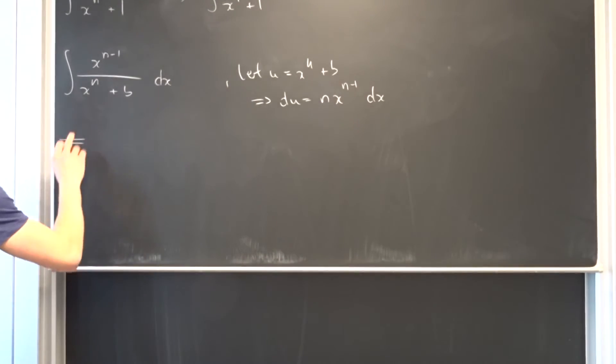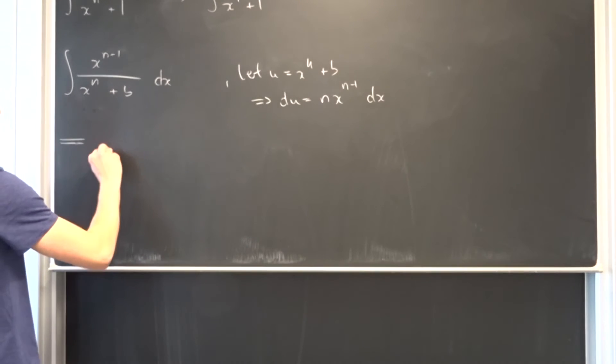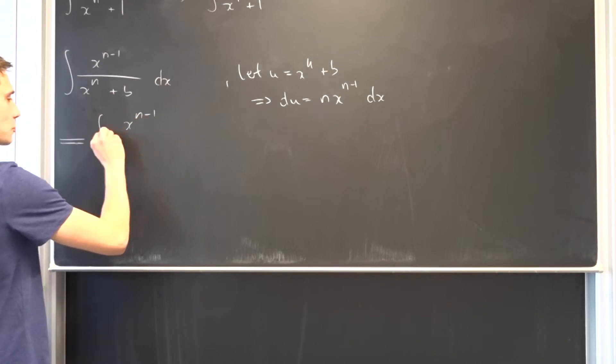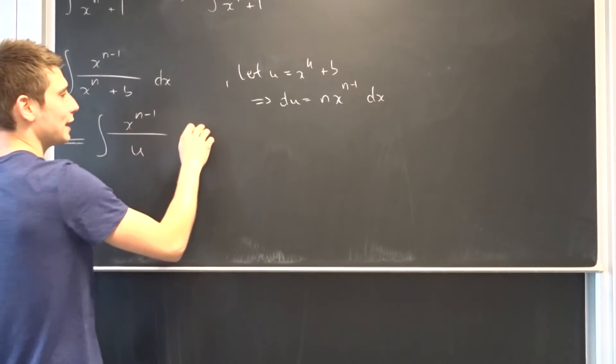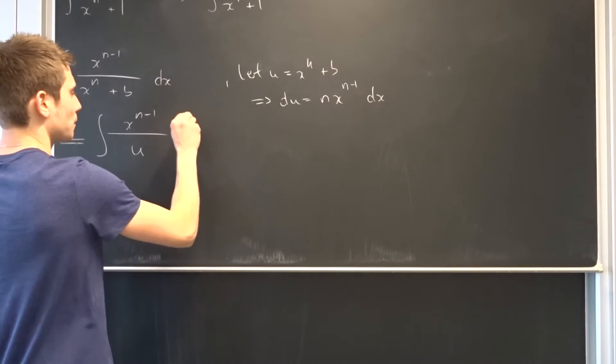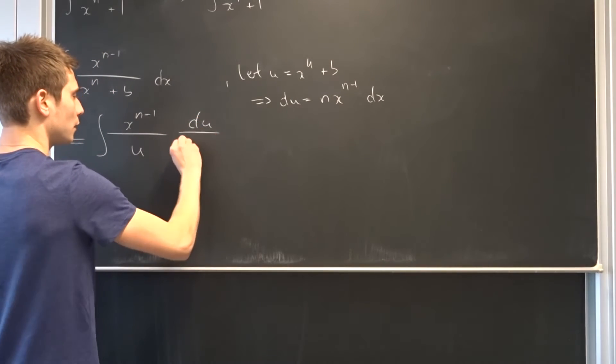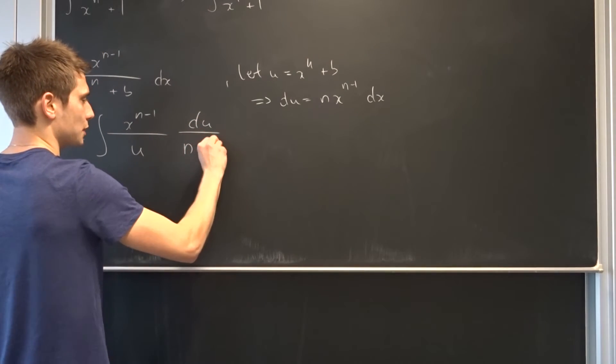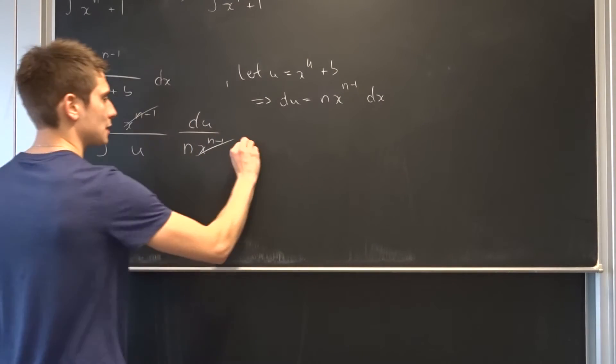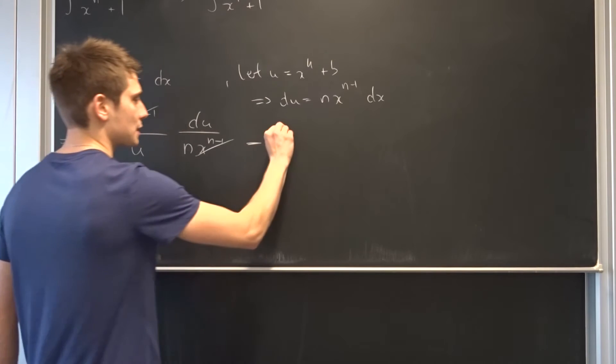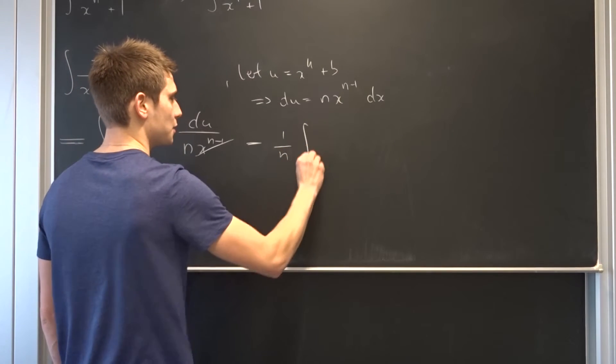So this whole thing is equal to the integral of x to the n minus 1 power over u, because that's over u, and the dx equals to du over n times x to the n minus 1 power. And as you might notice, this cancels out. So what we end up with is just 1 over n times the integral of du over u.